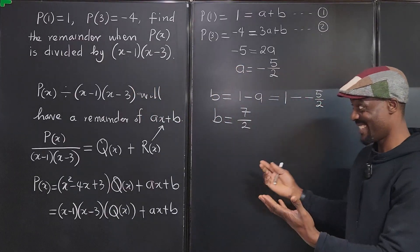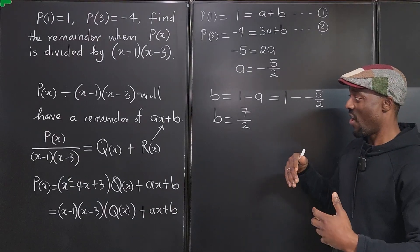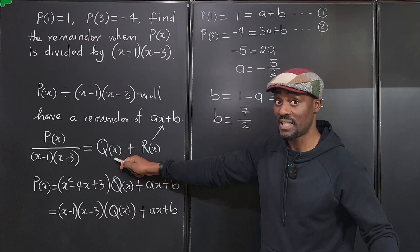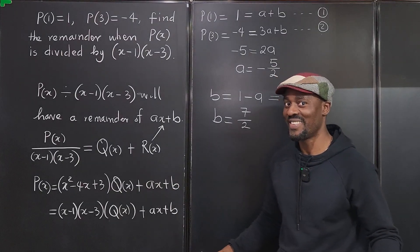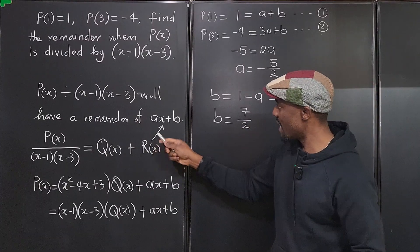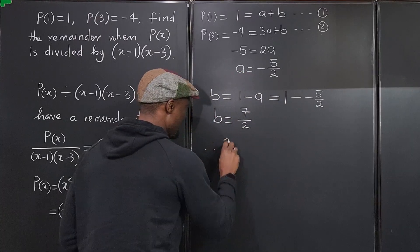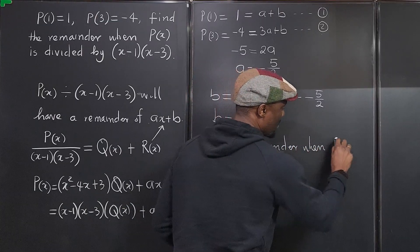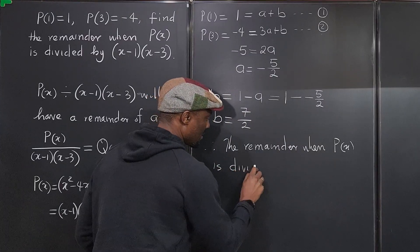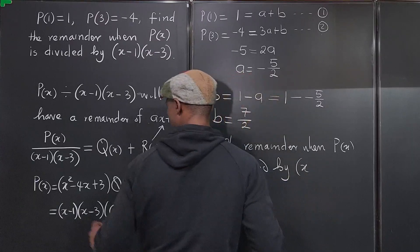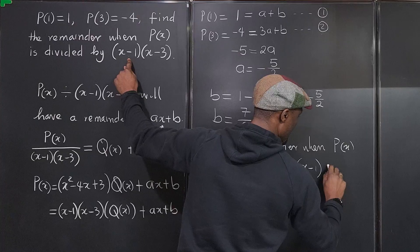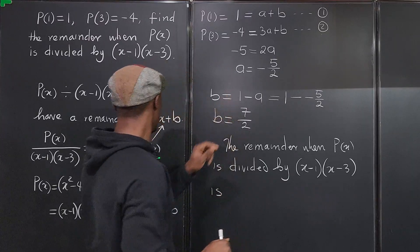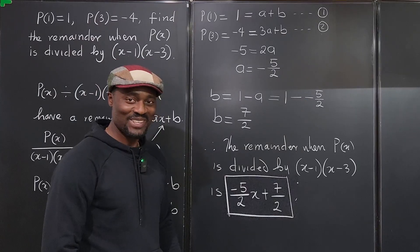And we're done! This is the fascinating thing about this problem — unless you realize you have to write the division in this form, you get stuck. You don't need to know the quotient, at least not at first. The remainder when P(x) is divided by (x-1)(x-3) is ax + b, where a = -5/2 and b = 7/2.